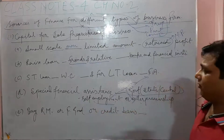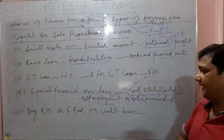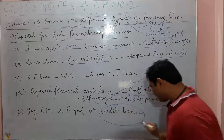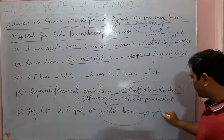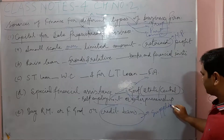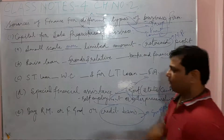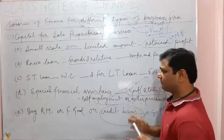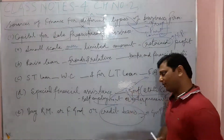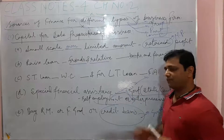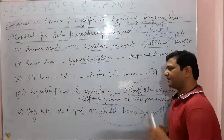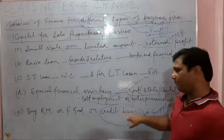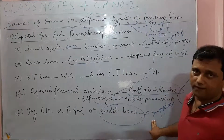The fifth source of funds is buying raw materials and finished goods on a credit basis. Credit basis means you buy goods from your suppliers. If the firm is a manufacturing concern, they will buy raw materials. If the firm is a trading concern, they will buy finished goods. On a credit basis, we purchase from suppliers.